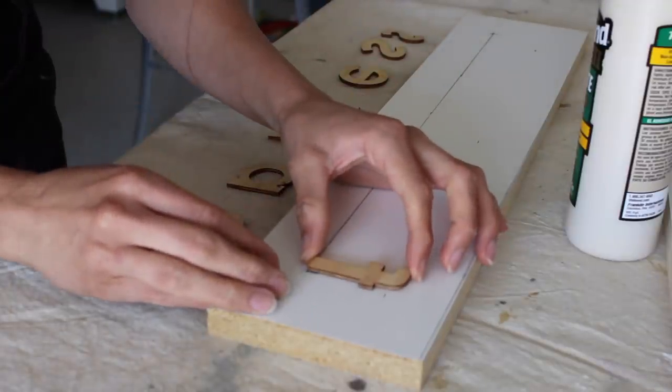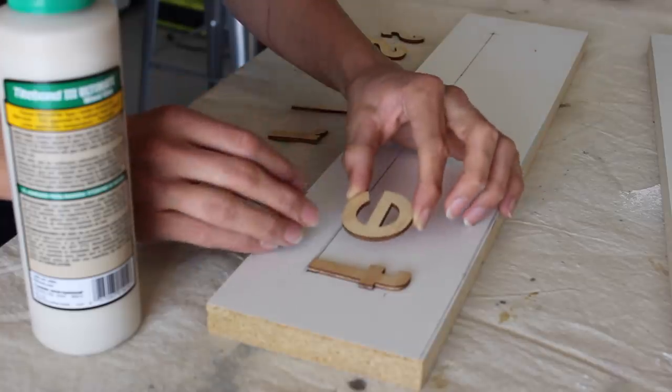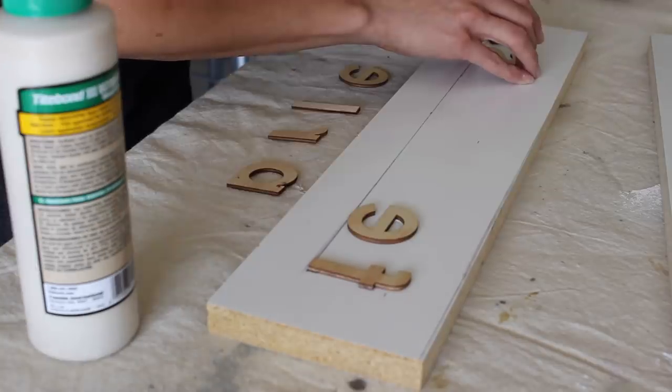I flipped the letters backwards because obviously when we flip the mold, you want to be able to read the word, and I secured it right on there with some wood glue.